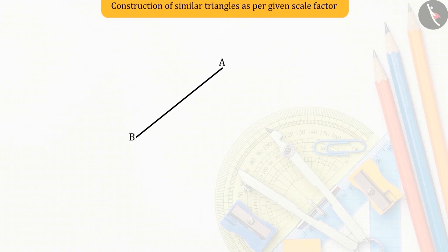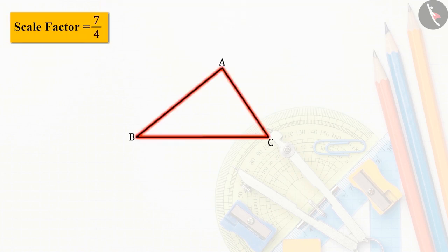Suppose to a given triangle ABC, a similar triangle is to be constructed, whose sides are 7 upon 4 of the given triangle. That is, scale factor is 7 over 4.